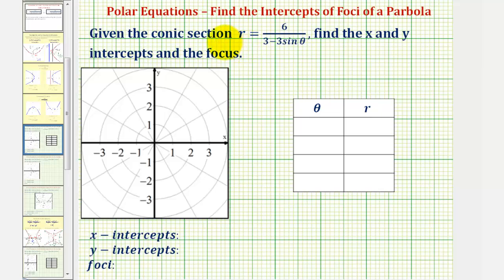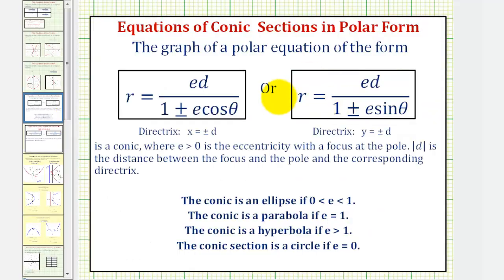We have a polar equation in this form, where we have sine theta here. If we write the equation in this form, where we have a one here in the denominator, this will be a conic section where e greater than one is the eccentricity with a focus at the pole. So if we write the equation in this form, we can determine the eccentricity, which will tell us what type of conic section we have, and also because we can write the equation in this form, we know it has a focus at the pole.